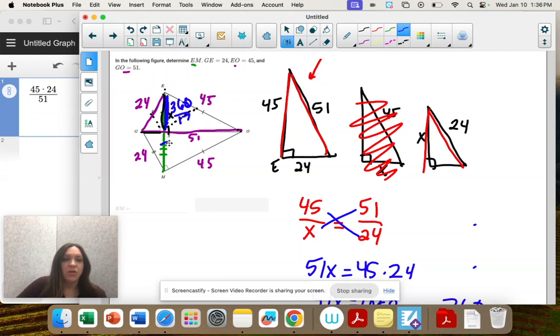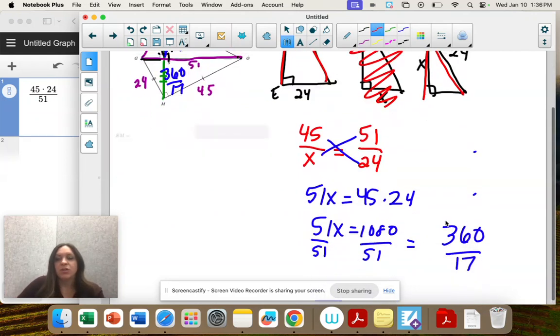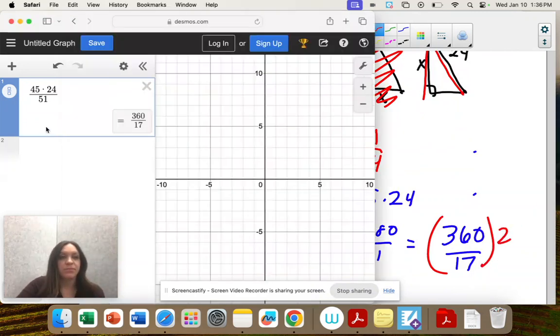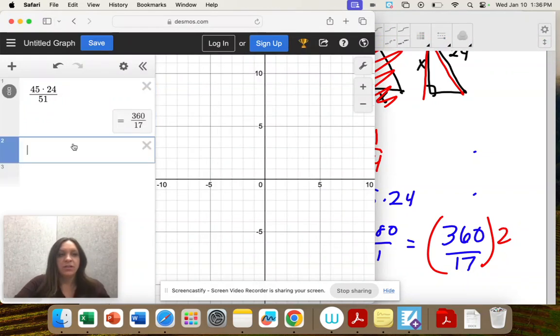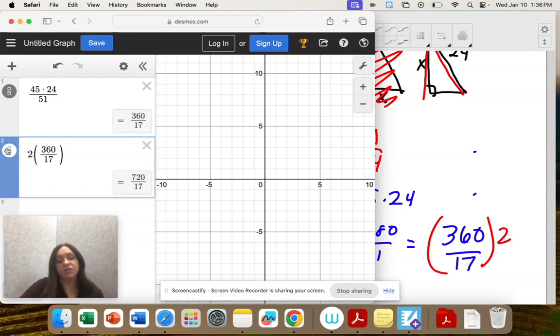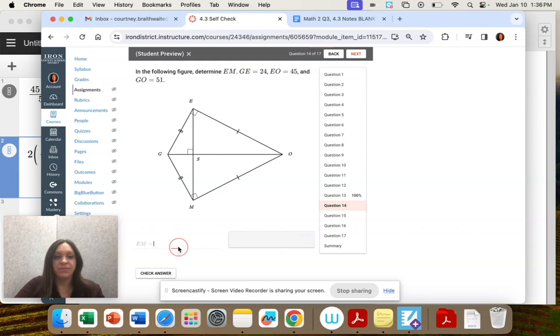But we want the full length. We want it twice. So now I'm going to multiply that by 2 because that's how you double something. So 2 times 360 over 17 is 720 over 17. So the numerator doubled. And that is our answer.